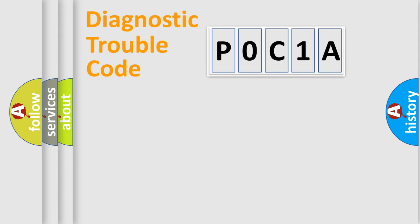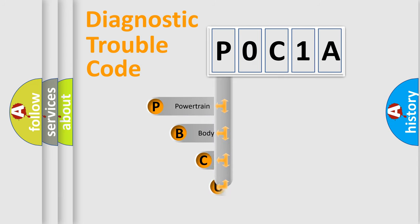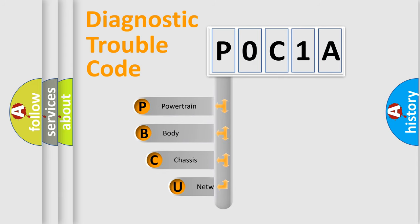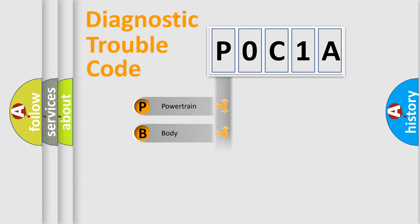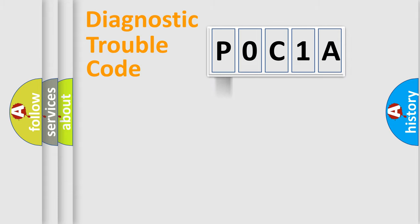First, let's look at the history of diagnostic fault code composition according to the OBD-II protocol, which is unified for all automakers since 2000. We divide the electric system of the automobile into four basic units: Powertrain, body, chassis, and network.